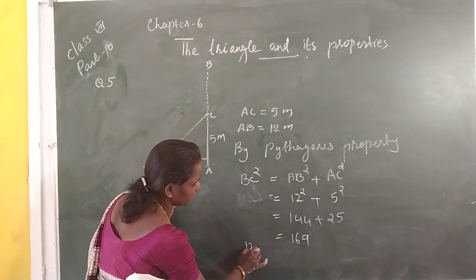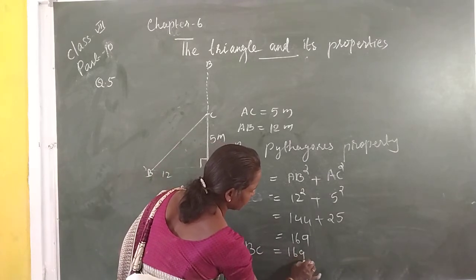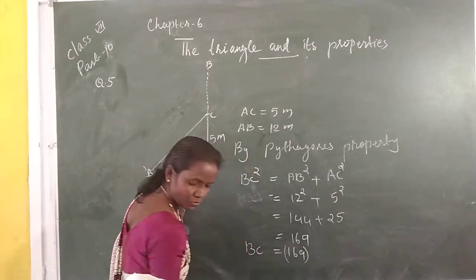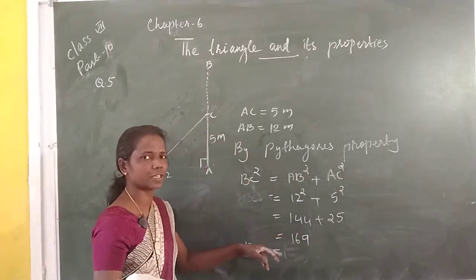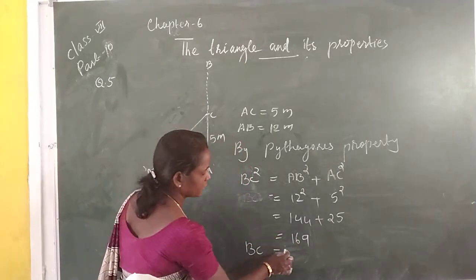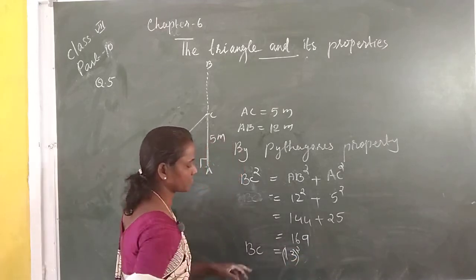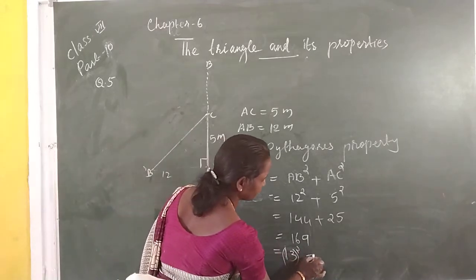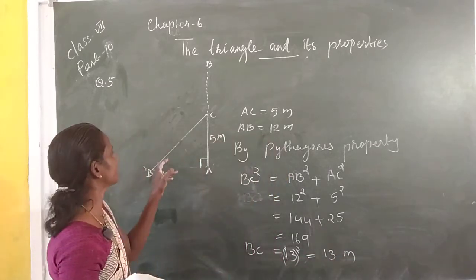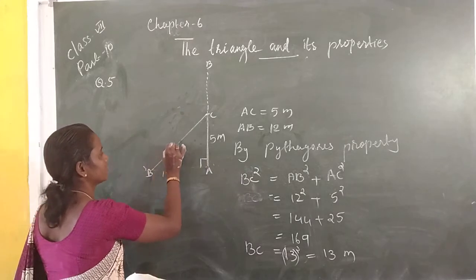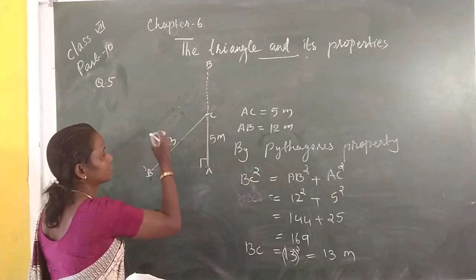So BC² = 169. What is the square root of 169? 13 squared is 169. So BC is equal to 13 meters.